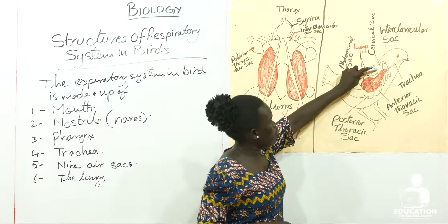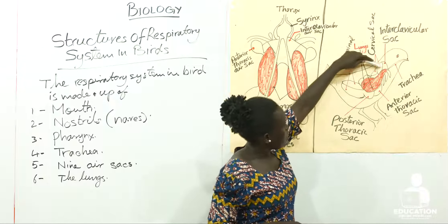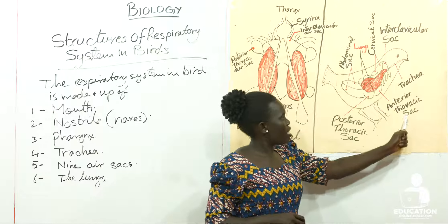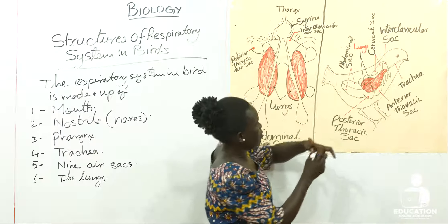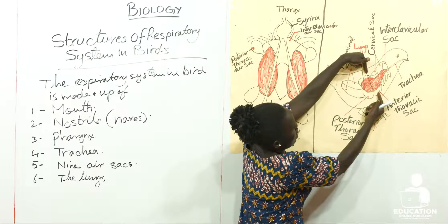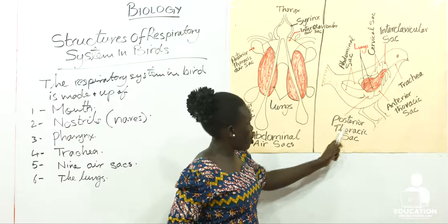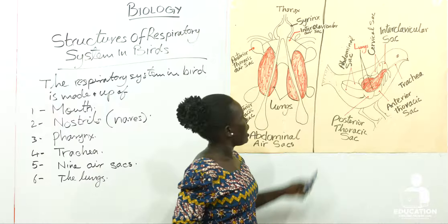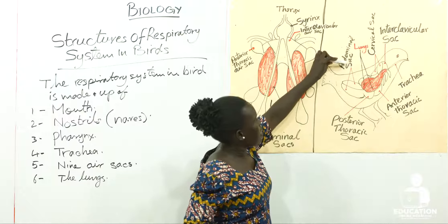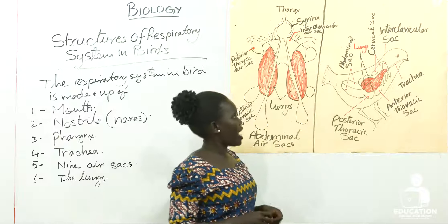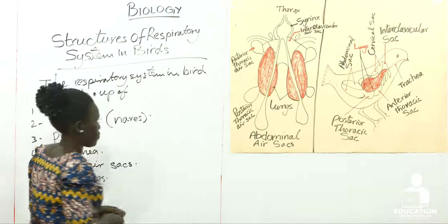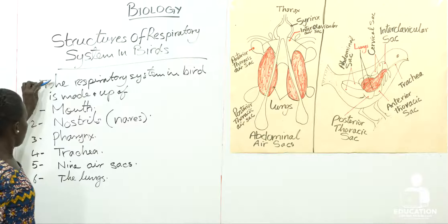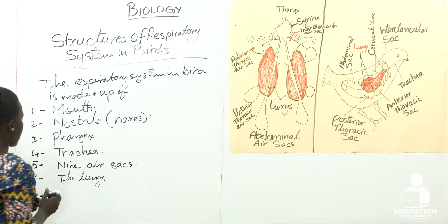We have two cervical sacs. We have two anterior thoracic sacs — that means one on each side. We have two posterior thoracic sacs, one on each side. Then two abdominal sacs. So the total number of air sacs is nine.